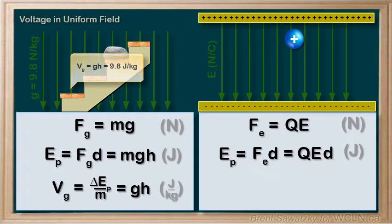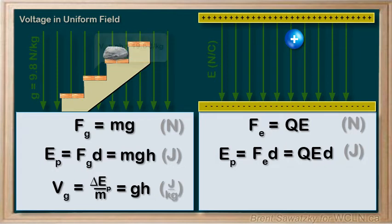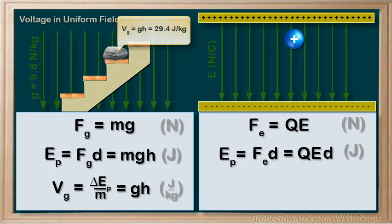The second step, being two meters high, would have a gravitational potential of g times two, or 19.6 joules per kilogram. The third step, g times three, 29.4 joules per kilogram, and so on.